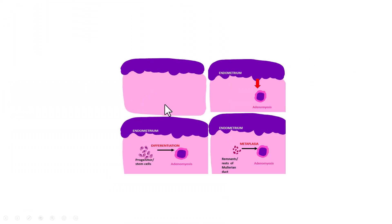So these are the four important theories: the invasion theory, the tissue reaction theory, the metaplasia theory, and the stem cell theory.